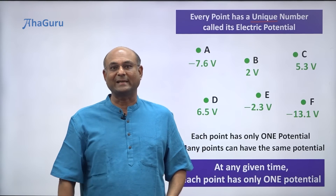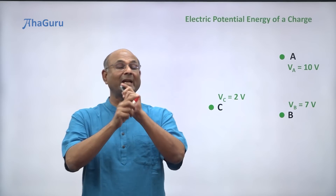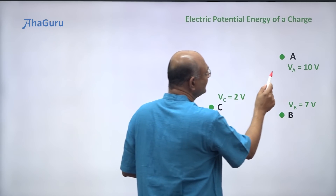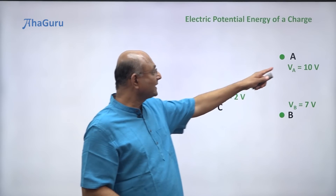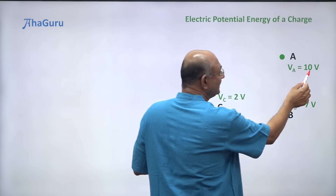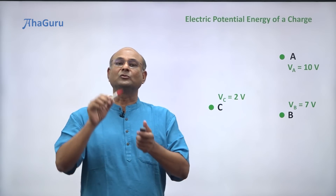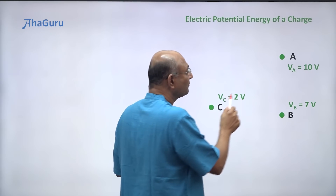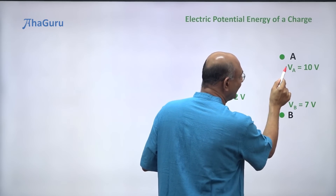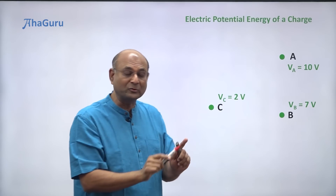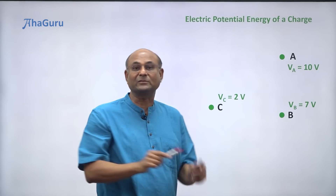What exactly is electric potential? Electric potential is what gives potential energy to a charge. The symbol we use for electric potential is V with a subscript — VA for potential at A. You know V also stands for volts, so be careful not to get confused. V subscript A means potential at A — VA is 10 volts. Similarly, potential at B is VB, potential at C is VC, and so on.